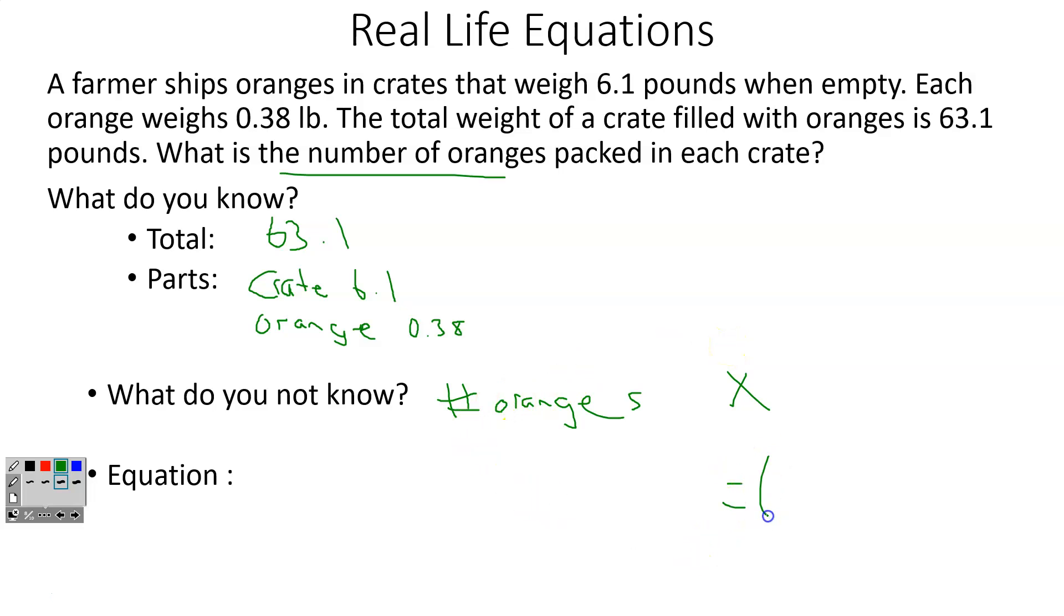So let's set it up. Put my total first, 63.1. I'm going to put my parts on this side, 6.1 and 0.38. And I'm going to start looking for some keywords. I see each, each means to multiply. So I'm going to multiply the oranges by the number of oranges. That's going to be my X. Now I don't see any other keywords, but if I think about it, I have an empty crate and oranges. So I'm going to be adding. So when you solve it, you're just going to be subtracting 6.1. You get 0.38X on this side and you get 57 on this side. We're going to divide by 0.38. And my X is going to equal 150. So 150 oranges can fit into a crate.